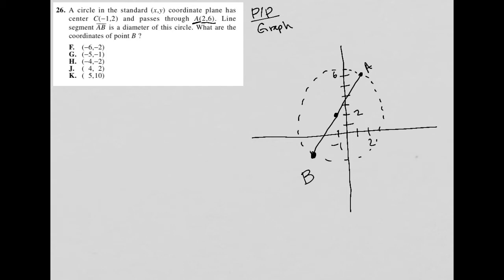And this is where having this visual is very useful because, for instance, when I look at choice F, (-6, -2), well, let's just continue on and see where this looks like it would be.